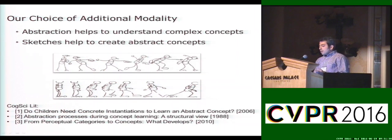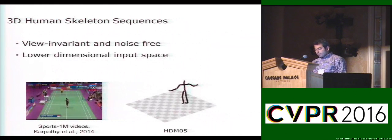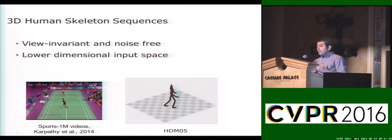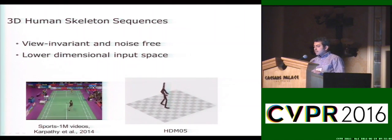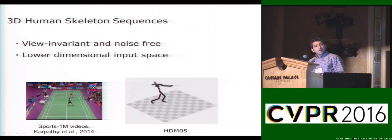Studies in cognitive science have shown that people can learn complex concepts from cartooning and abstract representations instead of learning from realistic training videos and images. This is a well-known phenomenon in cognitive science. The 3D skeleton can be one of those abstractions that can help action classification. Motivated by these findings, our main hypothesis is that human skeletons will improve accuracy by providing complementary information.